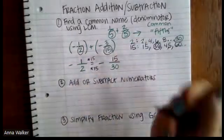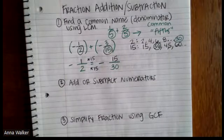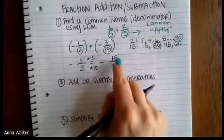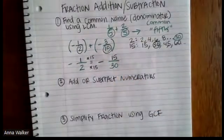So the new fraction, when we convert it to its common name, one half is equivalent to 15 thirtieths, which makes sense, right? 15 is half of 30.